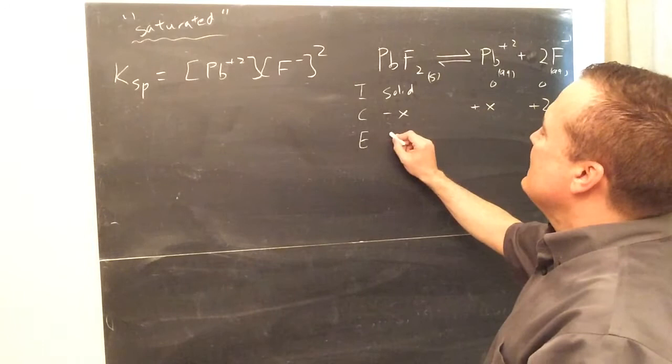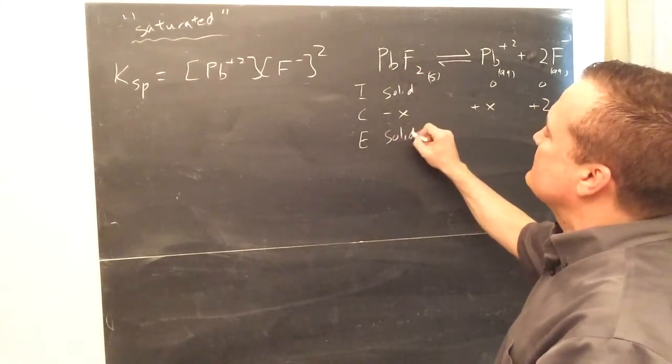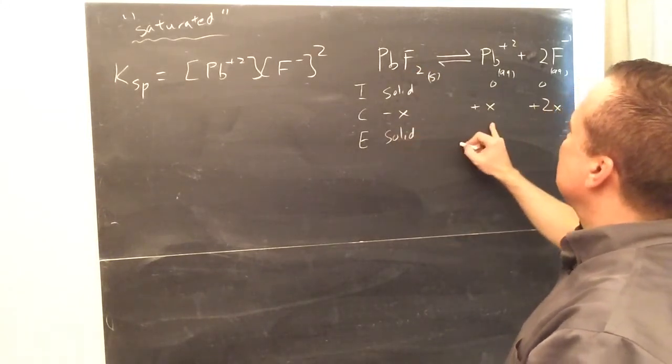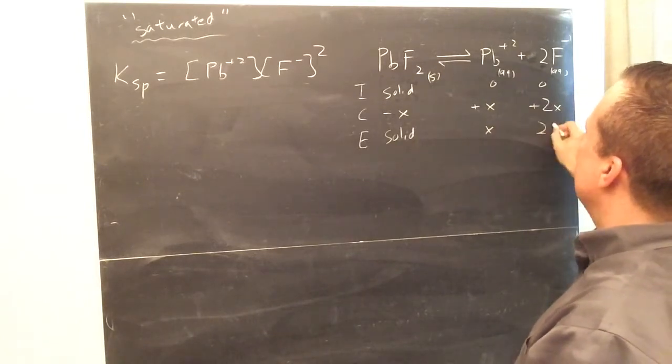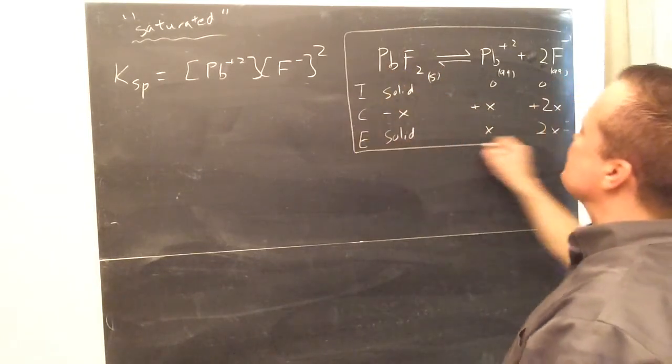Then, of course, at the end, there is no equilibrium for that. Well, it's still going to be solid. There will be a little bit of solid present. But then that's going to be X and that's going to be 2X. So there's your little ice box for a KSP.